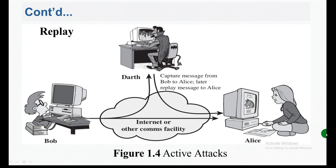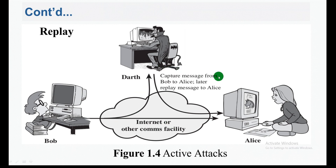As you have seen here, there is a Bob and an Alice. Data is transmitted from Bob to Alice. During the data transaction over the internet, the attacker can capture the message from Bob to Alice.